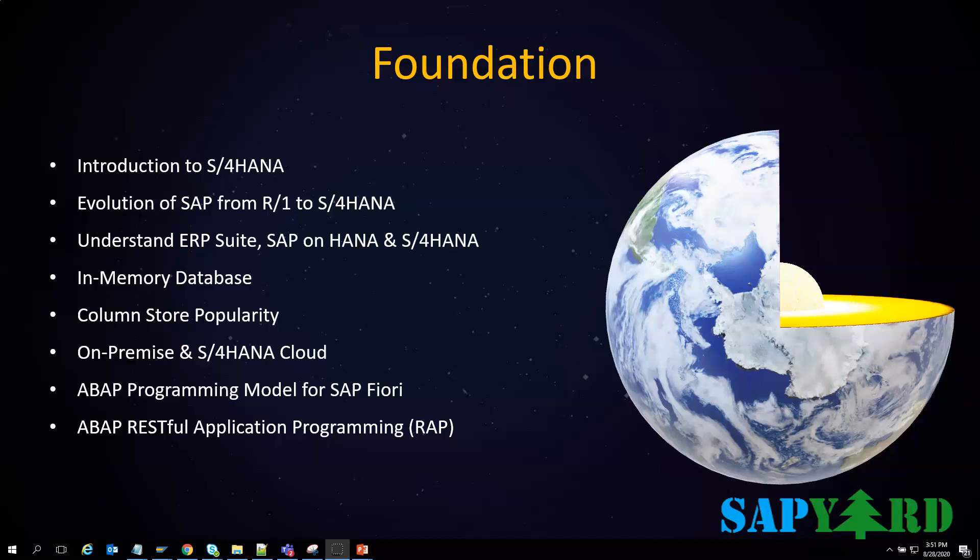We will invest some time in understanding the evolution of SAP from R1, R2 till S4HANA. We will also talk about the fundamental difference between SAP ERP, SAP on HANA and S4HANA, and cover unconventional concepts of in-memory and the popular column store. Even if you already knew it, you will still appreciate the way our trainer explains these concepts in a new flavor.